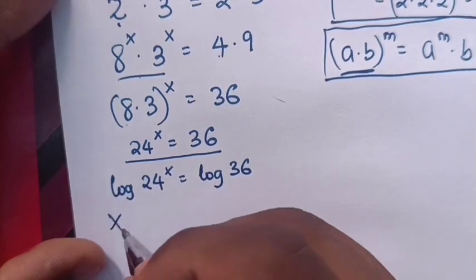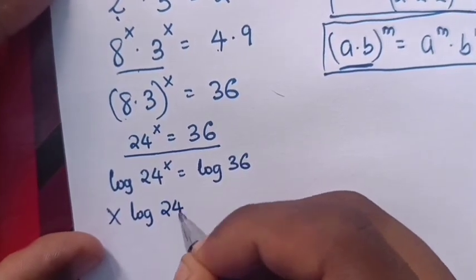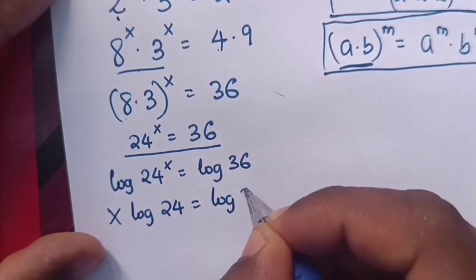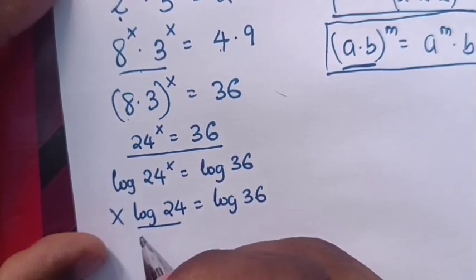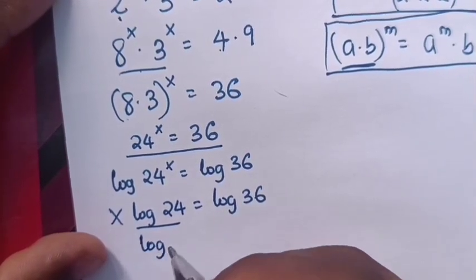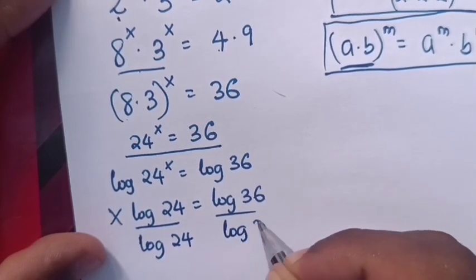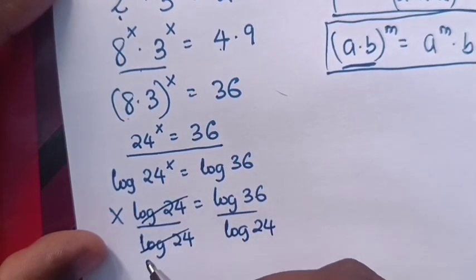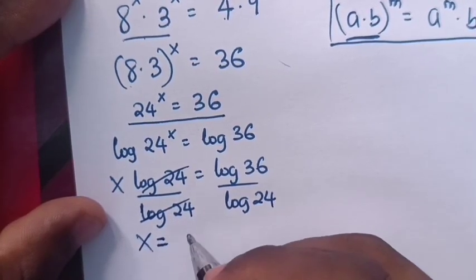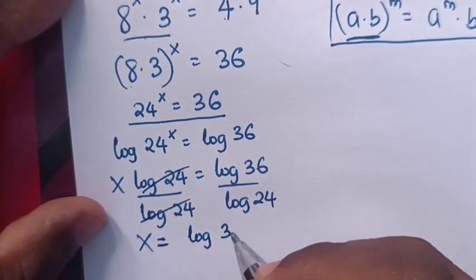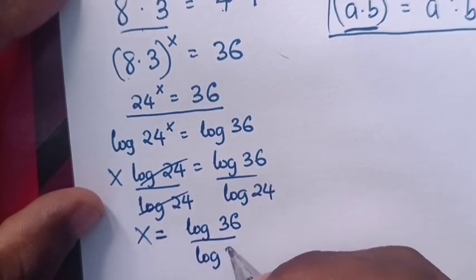x will move to the front, so it will be x log 24 is equals to log 36. We divide by log 24 in both sides. Therefore, x is equals to log 36 over log 24.